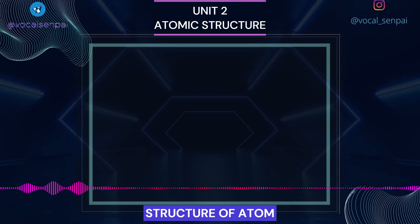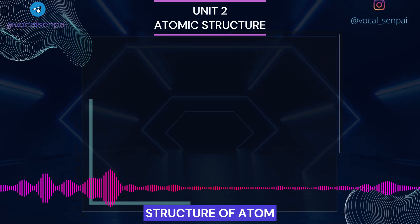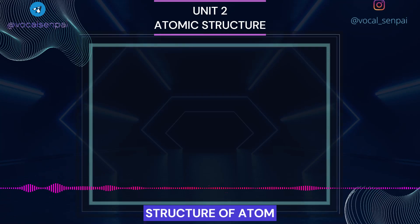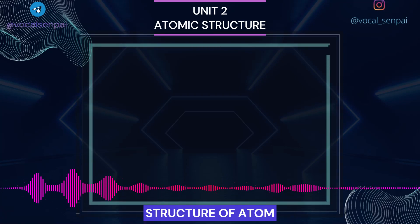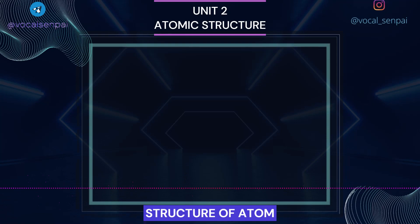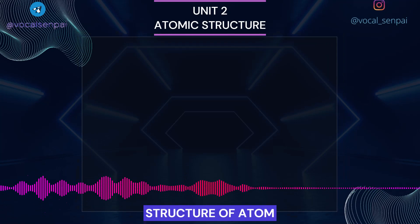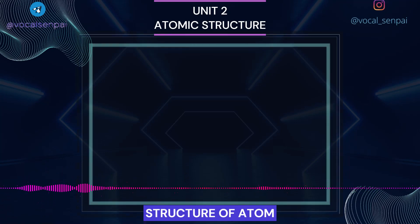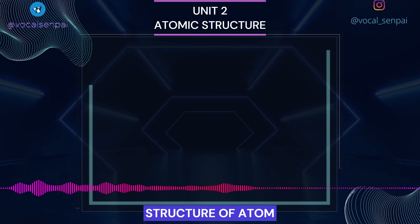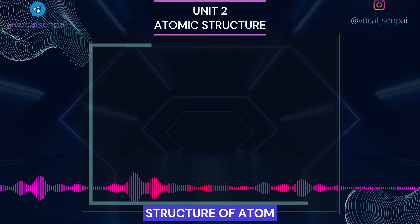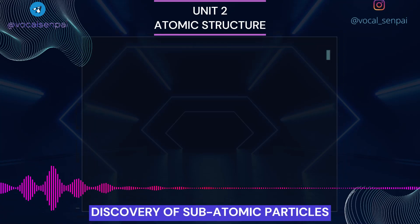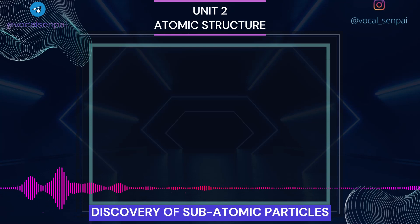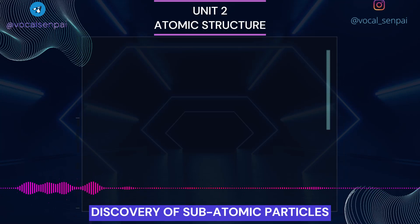For example, it was known that substances like glass or ebonite when rubbed with silk or fur get electrically charged. In this unit we start with the experimental observations made by scientists towards the end of the 19th and beginning of the 20th century. These established that atoms are made of subatomic particles, i.e., electrons, protons and neutrons — a concept very different from that of Dalton. Discovery of Subatomic Particles: An insight into the structure of atom was obtained from the experiments on electrical discharge through gases.